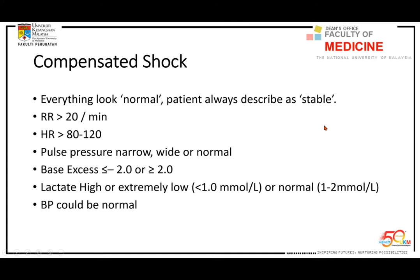The telltale sign of compensated shock is respiratory rate and base excess. These two will give you very clear information about the patient's cellular shock. The respiratory rate is a metabolic component of the vital sign — I repeat, respiratory rate is the metabolic component of the vital sign. Heart rate and BP are more systemic components, but respiratory rate is metabolic. Acidosis causes respiratory rate to increase.